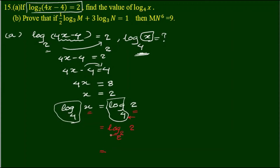On the other hand, we will add the power. Here we will add power to power. We will add 1 by 2, log 2 base 2. Log 2 base 2 is 1 by 2, equal to 1 by 2. Therefore log x base 4 is equal to 1 by 2.